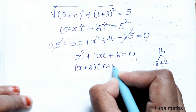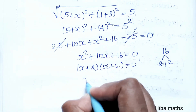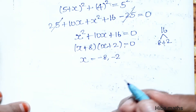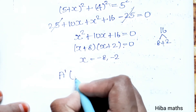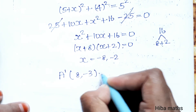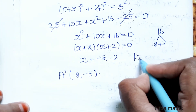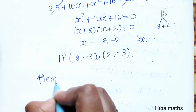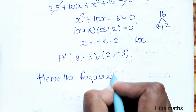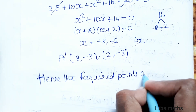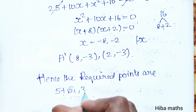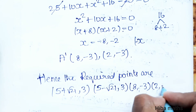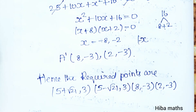Solving x squared plus 10x plus 16 equals 0: x equals minus 8 or x equals minus 2. Since in Case 2, x is negative, substituting back gives the points (minus 8, minus 3) and (minus 2, minus 3), which is (8, minus 3) and (2, minus 3). Hence the required points are: (5 plus root 21, 3), (5 minus root 21, 3), (8, minus 3), and (2, minus 3). Thank you so much for watching.